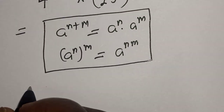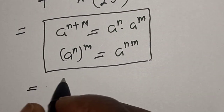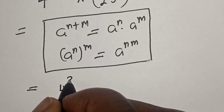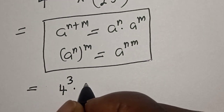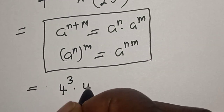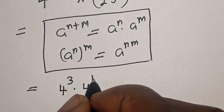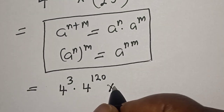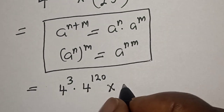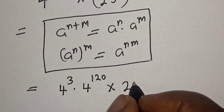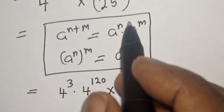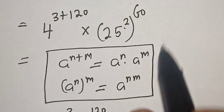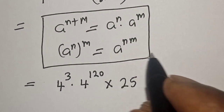Applying these rules, this equals 4 to the power of 3 multiplied by 4 to the power of 120, then multiplied by 25 to the power of 2 times 60, which is 120.